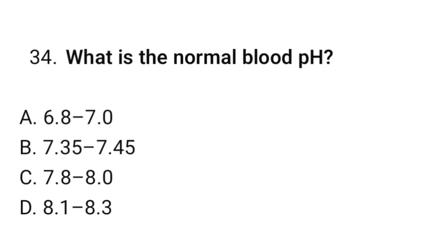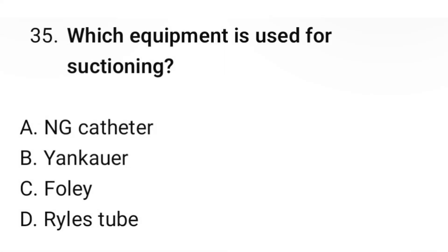Question number 34: What is the normal blood pH? The correct option is B: 7.35 to 7.45. Question number 35: Which equipment is used for suctioning? The correct option is B: Yankauer.